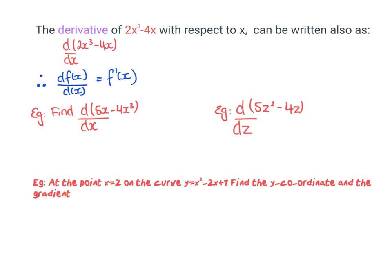The derivative of 2x³ minus 4x with respect to x can also be written using the d/dx notation — they just put the function inside. So finding that derivative: for the first term it'd be 1 times 5 giving 5x⁴, and 3 times negative 4 giving negative 12x squared. For the other example, the derivative would be 2 times 5 which is 10, reducing the power by 1.